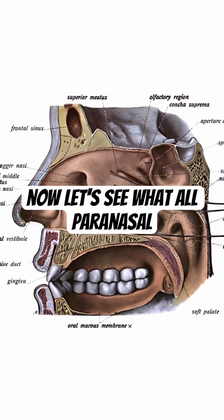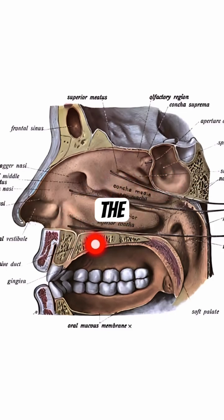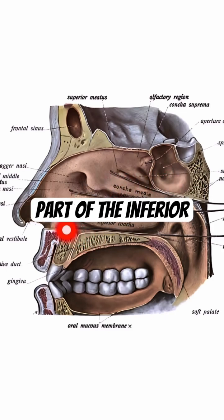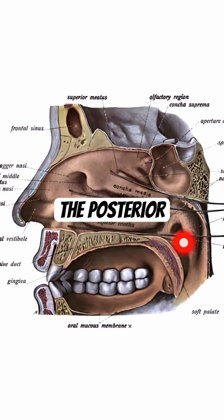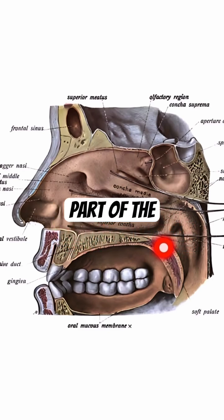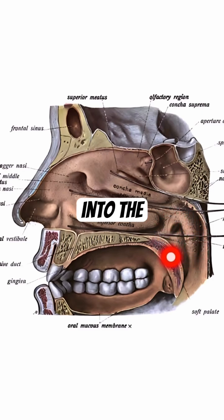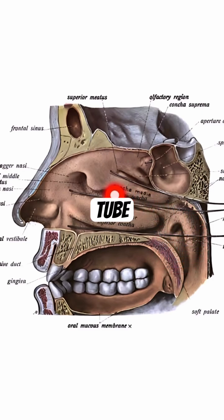Now, let us see what paranasal sinuses open into each meatus. The anterior part of the inferior meatus opens into the nasolacrimal duct, whereas the posterior part of the inferior meatus opens into the eustachian tube.